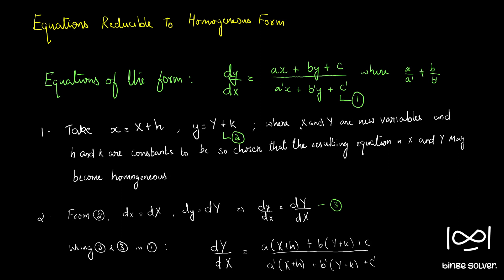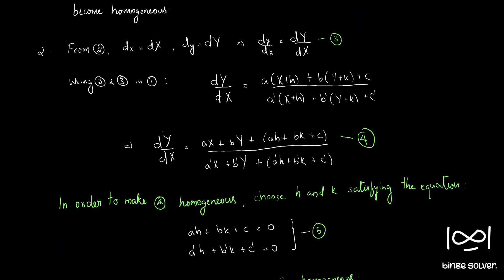Using equations 2 and 3, equation 1 becomes: dY/dX equals a(X+h) + b(Y+k) + c divided by a'(X+h) + b'(Y+k) + c'. Further simplifying, this becomes dY/dX equals (aX + bY + ah + bk + c) divided by (a'X + b'Y + a'h + b'k + c'). Let's call this new equation 4.